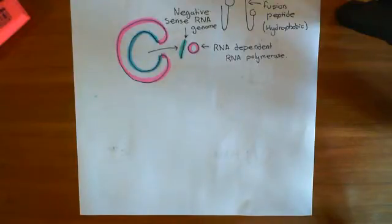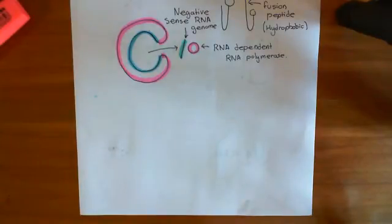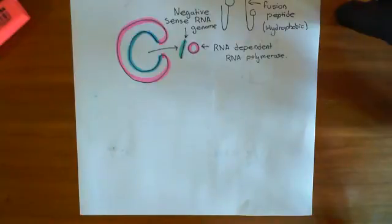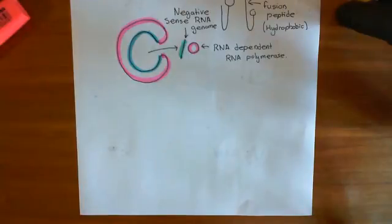Welcome to this next video in which we are discussing the replication cycle of the influenza virus. So far what we've discussed is that the influenza virus will come to the host cell. The hemagglutinin molecule will bind to sialic acid molecules in the membrane of the host cell. That will then trigger receptor-mediated endocytosis, and the virus particle will go into an endosome.